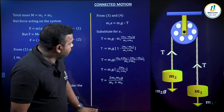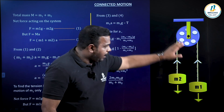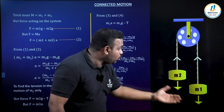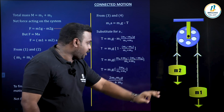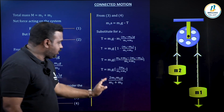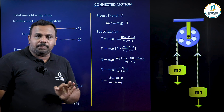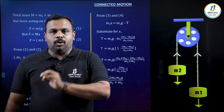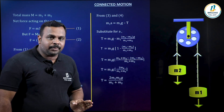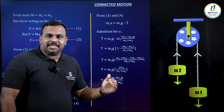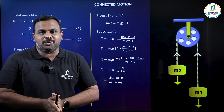When the system is released, M1 goes down and M2 goes up with a common acceleration, and the tension in the string is T equals 2M1M2g divided by M1 plus M2. Hope you understand this topic clearly — how to find the tension in a string in vertical motion. Thank you very much.